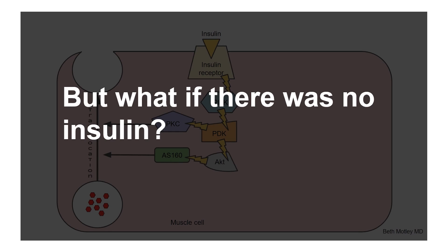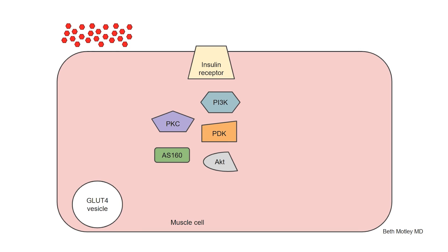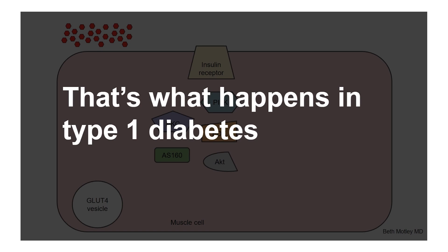But what if there was no insulin? If we don't have the key to unlock the door, sugar is going to build up outside the cell. That's what happens in type 1 diabetes, which is not the case in most people.